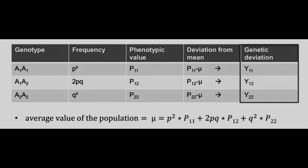The average value of the population is a simple multiplication of the frequency and the value of the phenotype. The frequency itself represents the number of times the particular allele is present in the genotype. So if you have the alleles A1 and A2, we can represent them by the frequencies p and q.